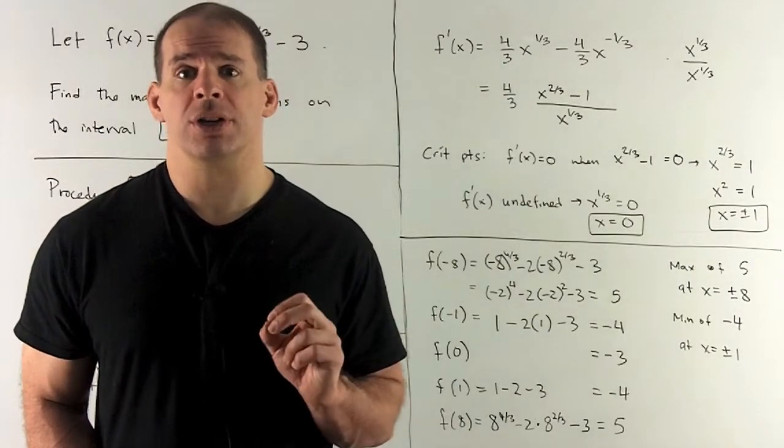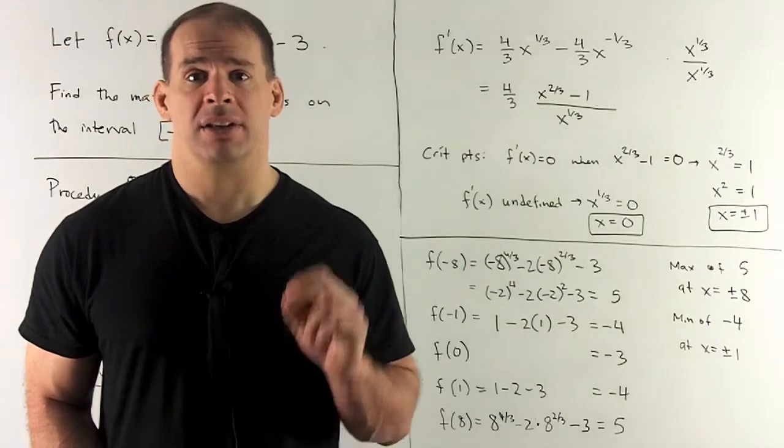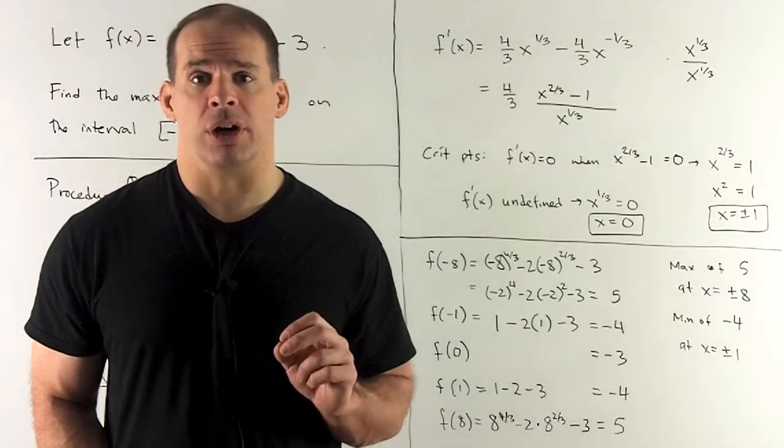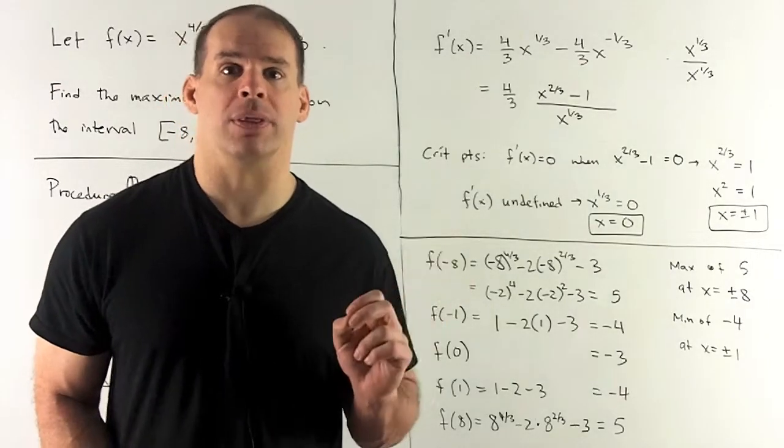For x^(2/3), 2/3 comes down, we subtract 1. It gives me x^(-1/3). Then our derivative is f'(x) = (4/3)x^(1/3) - (4/3)x^(-1/3).